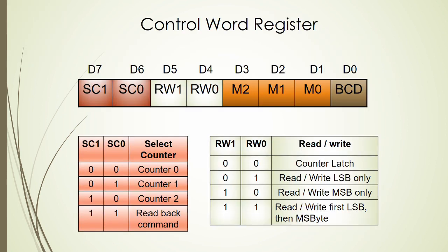The control word register format: bits D7 and D6 (SC1 and SC0) select the counter — 00 selects counter 0, 01 selects counter 1, 10 selects counter 2. If SC1 SC0 = 11, it is a read-back command, which is effectively illegal for normal counter selection.